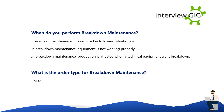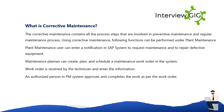The order type for breakdown maintenance is PM02. What is corrective maintenance? Corrective maintenance contains all the process steps involved in preventive and regular maintenance. Using corrective maintenance, a plant maintenance user can enter a notification in the SAP system to request maintenance and repair defective equipment. The maintenance planner can create and schedule a maintenance work order; the work order is received by the technician, and an authorized person in PM approves and completes the work as per the work order.